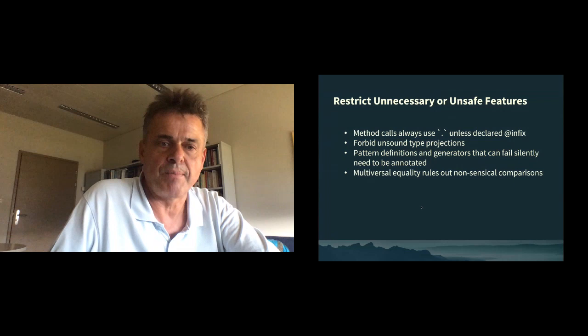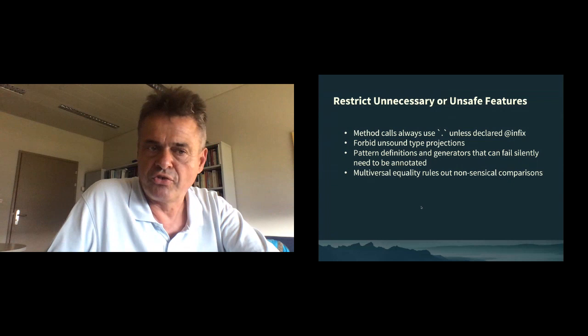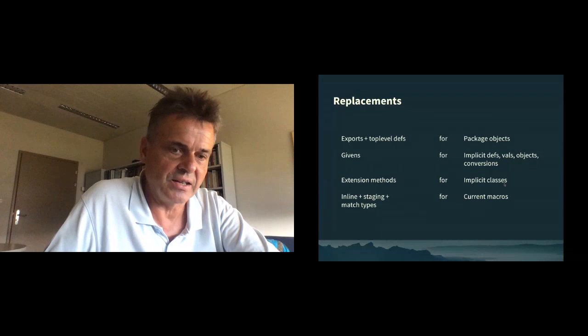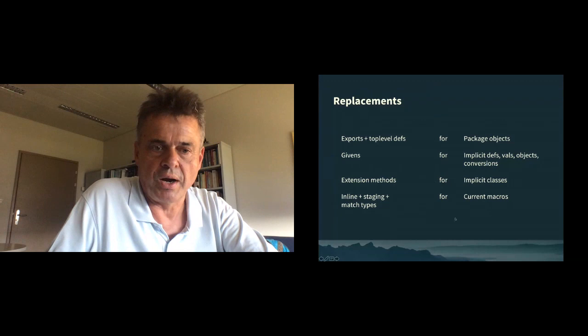There are quite a few replacements where we do things in a different way. We don't really need package objects anymore — we have exports and top-level definitions. We have the new scheme of `given` for the zoo of implicit definitions we had before. We have extension methods, which are a really nice feature — I'm using them more and more and now I don't know how I could have lived without them. Previously we had implicit classes, which are much chunkier for the same functionality. And we have a completely revamped metaprogramming story with inline, staging, and match types instead of the current macros, which were very expressive but also very easy to shoot yourself in the foot with.